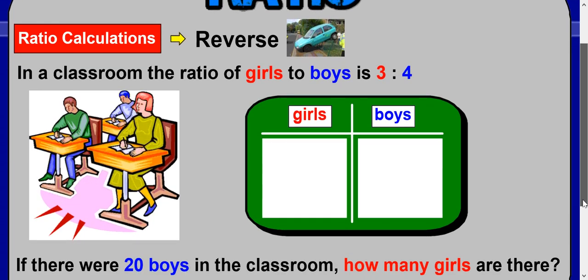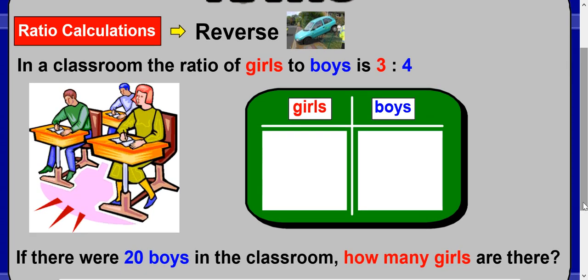Here we go again. In the classroom, the ratio of girls to boys is 3:4. Put a 3 at the top of the table and a 4. Now we're told if there's 20 boys, how many girls are there? Put the 20 in the correct column: 20 boys. Work out our multiplier again: four times five makes 20. So times the other side by 5 as well. There would be 15 girls.